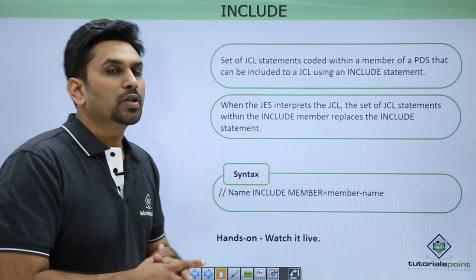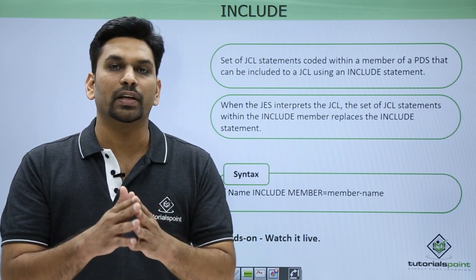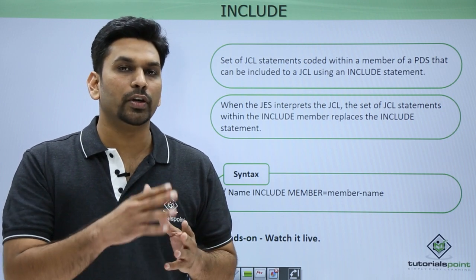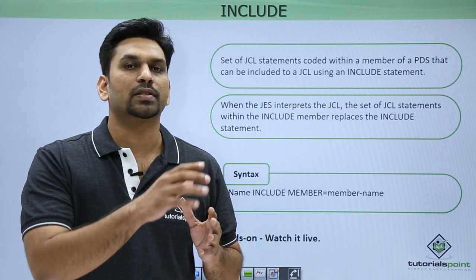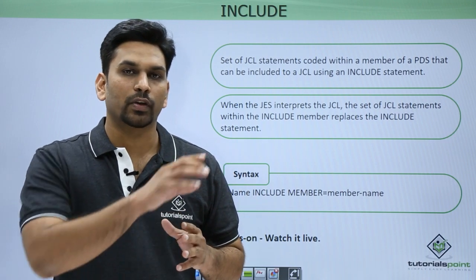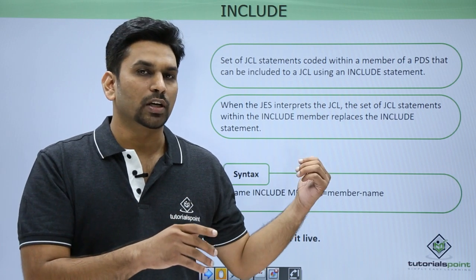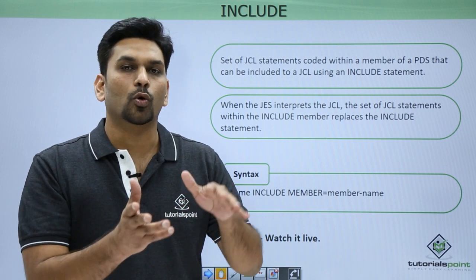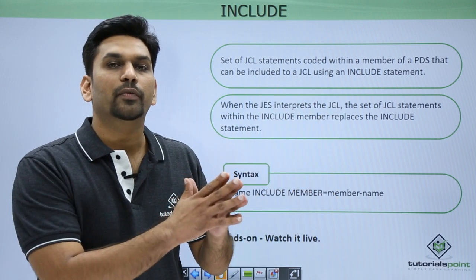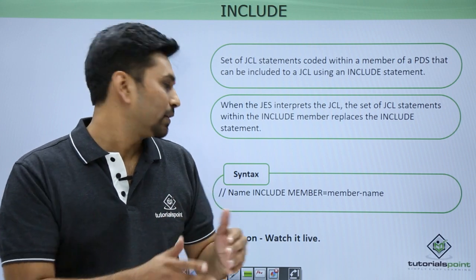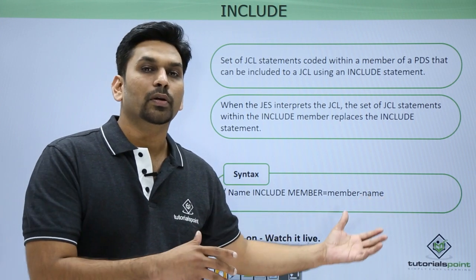Then we have INCLUDE. Suppose you have a block of lines that needs to be there in all the JCLs — you would need to write it again and again. In JCL we have an option: in one member you can code those lines. What INCLUDE does is when it is submitted, it copies from that include member and pastes it into our main JCL. So we are using one member and copying it into many different modules. The syntax is: name, then INCLUDE, then the member name where our member is present.